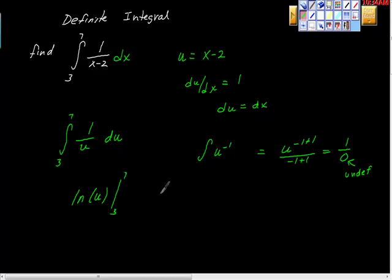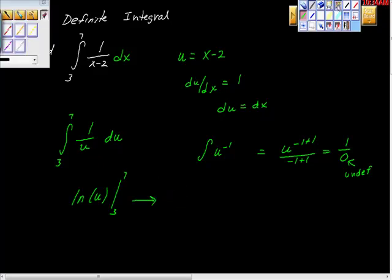And I'm going to resubstitute in u. So from here, I'm going to go to this and say that this is ln of x minus 2, because that was me resubstituting for u, as evaluated from 3 to 7 here.